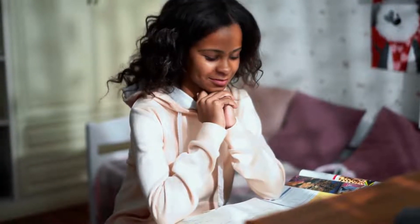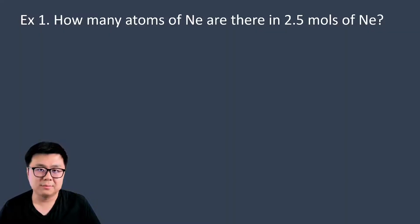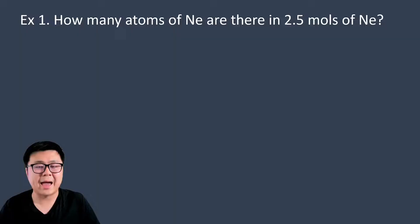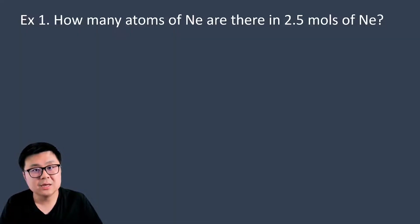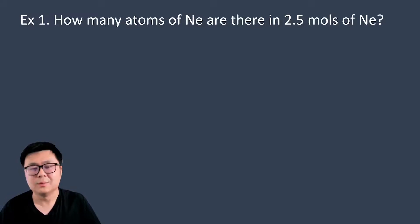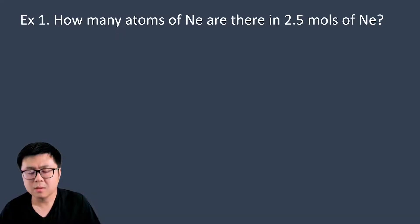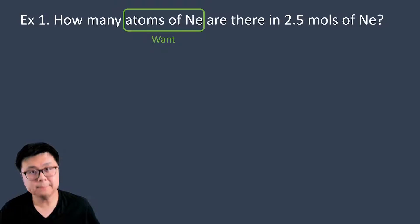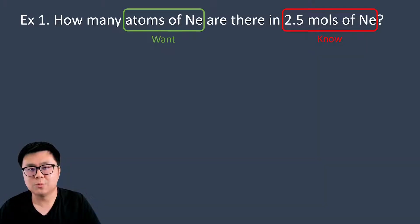Let's look at the first example. The question says: how many atoms of neon are there in 2.5 moles of neon? What do they want? They want atoms of neon. What do we know? They gave us 2.5 moles of neon — that's what we have. Feel free to pause and try it yourself, and then come back.